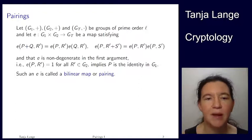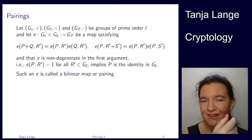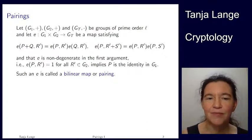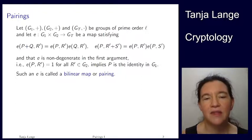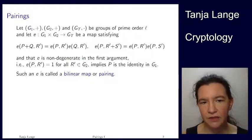And then we will also require that the map is non-degenerate. So if we're seeing that the output is 1, the 1 element as a number 1, and if that happens for one P and for all R' in G2, then we can conclude that P is the identity in G1. So if G1 is the Weierstrass curve, then P would be the point of infinity.